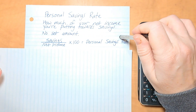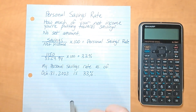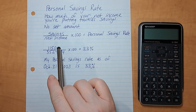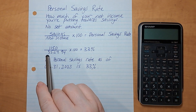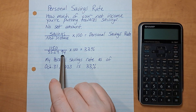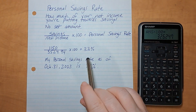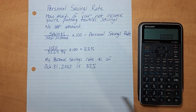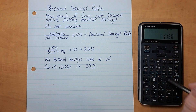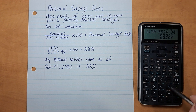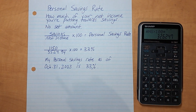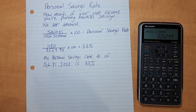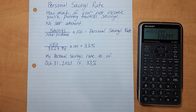Here are my numbers — keep your laughter to a minimum! Each month I put $1,150 away in various savings accounts. My net income is $3,524.94 per month. So: 1150 divided by 3524.94, times 100, equals 33. My personal savings rate as of October 31st, 2023 is 33% — meaning I'm saving 33% of my net income each month.